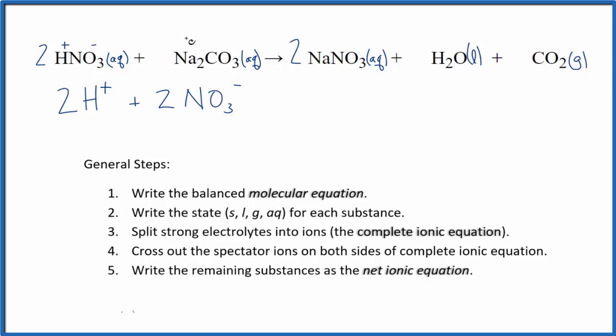Sodium is in group 1 so it has a 1 plus charge. Carbonate ion is always 2 minus. That's a great one to remember. So we have Na plus the sodium ion and the subscript 2, that means there's two sodium atoms. So we're going to put a coefficient of 2 in front of the sodium ion. For the carbonate we just have one of those. So these are the reactants.